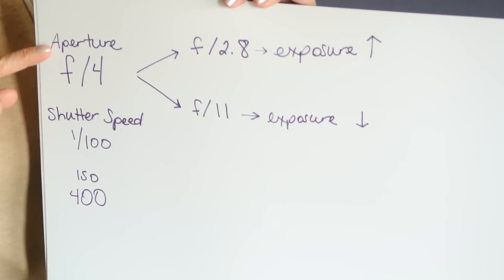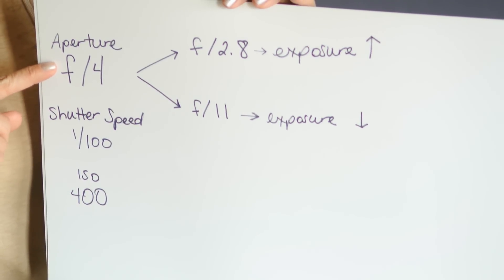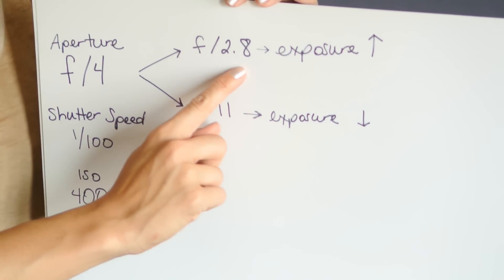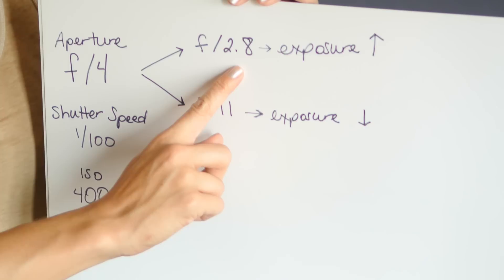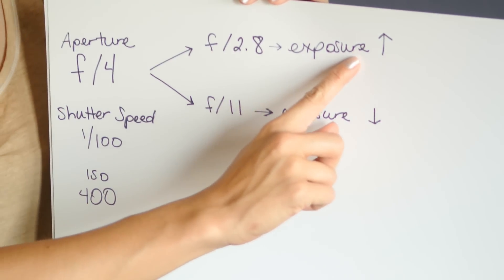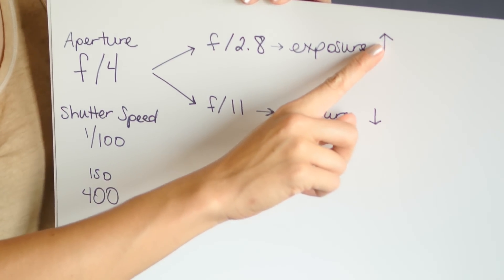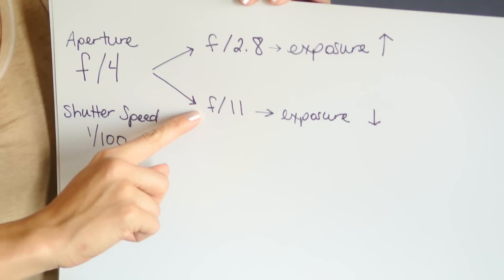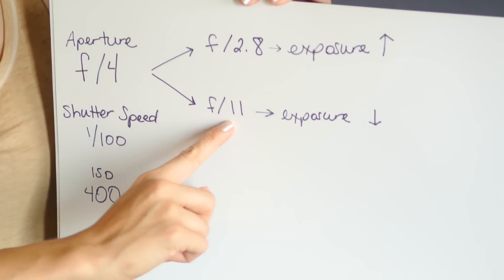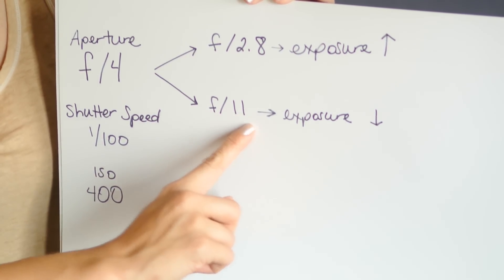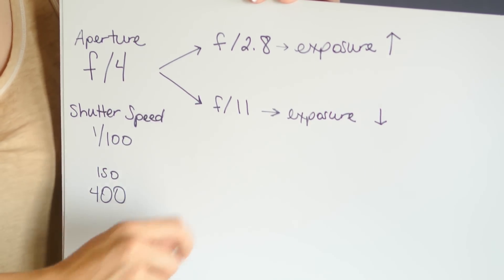Let's change aperture first. If we widen our aperture to f2.8, we're letting more light into the camera, so our exposure is going to go up. But if we narrow our aperture to f11, not as much light can get in, so our exposure is going to go down.